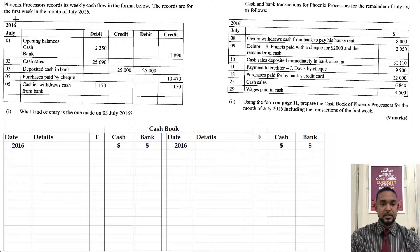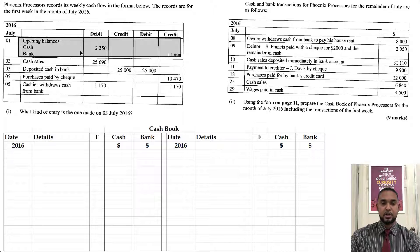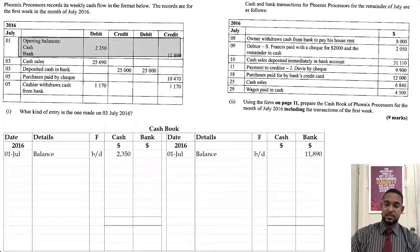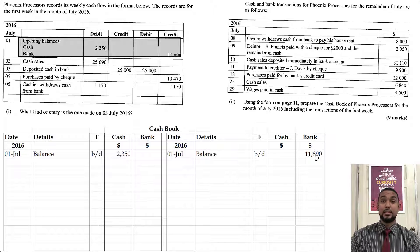So opening balances — let's deal with that first. The cash account had a debit balance, bank had a credit balance. So we're going to put balance brought down 2,350 cash on the debit side. On the credit side, we have balance brought down 11,890 under the bank column on the credit side, because it is an overdraft.